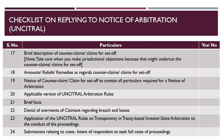The 21st item is recounting of the facts relevant to the dispute from the perspective of the respondent. The 22nd item is the denial of averments of the claimant regarding breach and losses — denial is to be specific to each averment. The 23rd item relates to the application of the UNCITRAL Rules on Transparency in Treaty-based Investor-State Arbitration to the conduct of the proceedings. The last item relates to submissions relating to costs, including regarding the intent of the respondent to seek full costs of the proceedings.